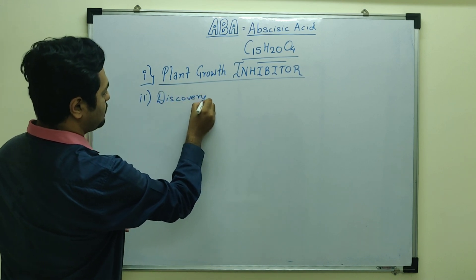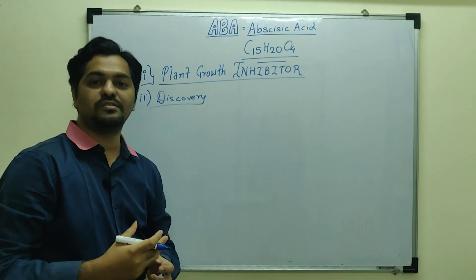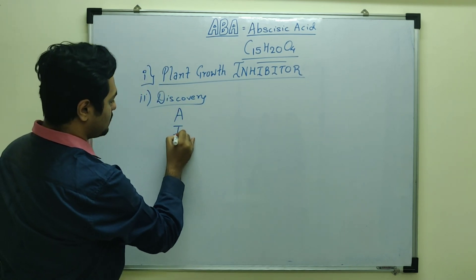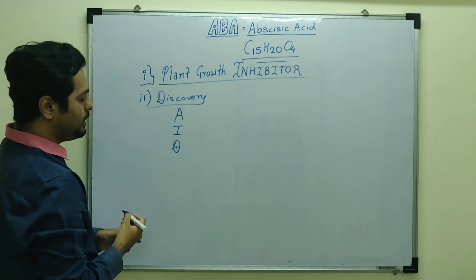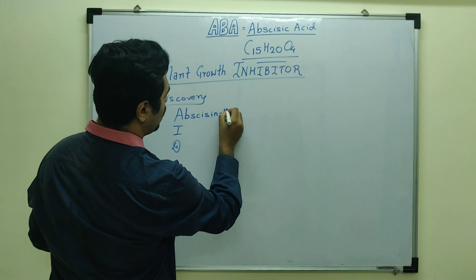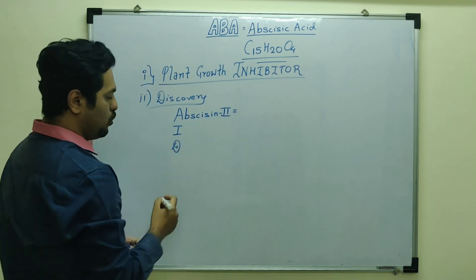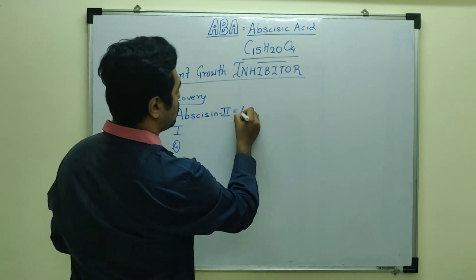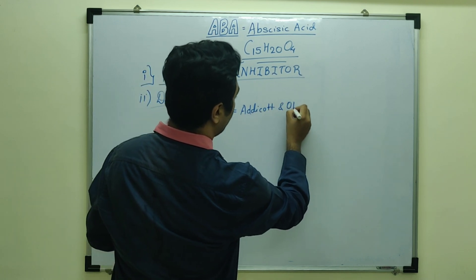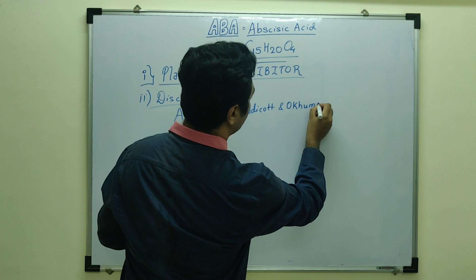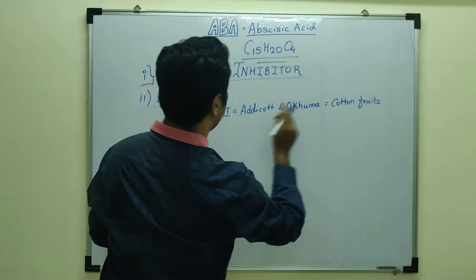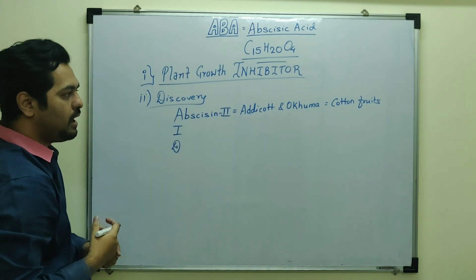Abscisic acid was discovered by different scientists and given different names. The first name was Abscessin 2. This plant hormone was discovered by Adicot and Okuma from cotton fruits — Adicot and Okuma identified a substance named Abscessin 2 in cotton fruit plants.